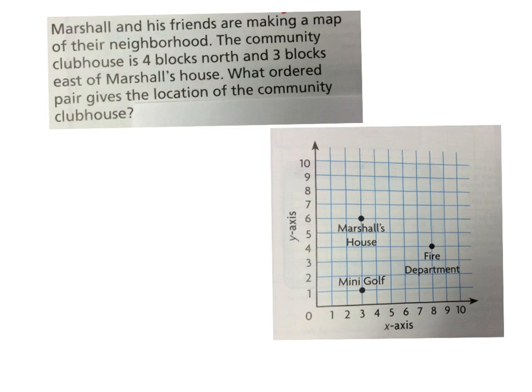It says Marshall and his friends are making a map of their neighborhood. The community clubhouse is four blocks north and three blocks east of Marshall's house. What ordered pair gives the location of the community clubhouse? So what important information do we need in order to solve this problem? First of all, what is the problem asking? What is the location of the clubhouse? We want to know what ordered pair gives the location of the clubhouse.